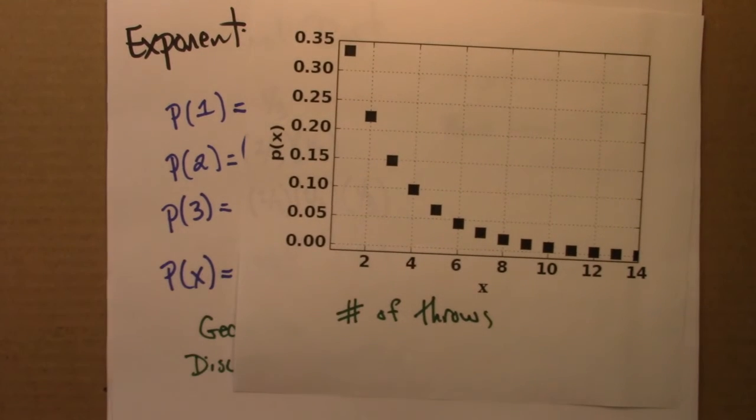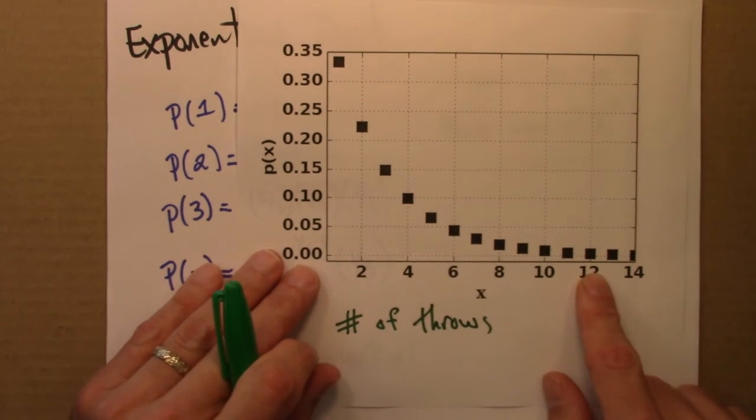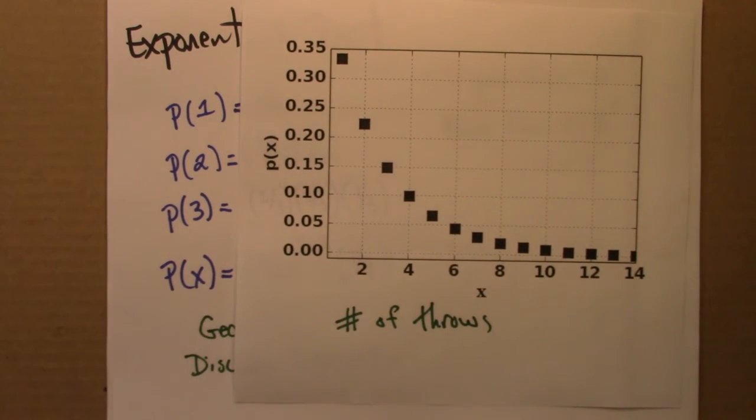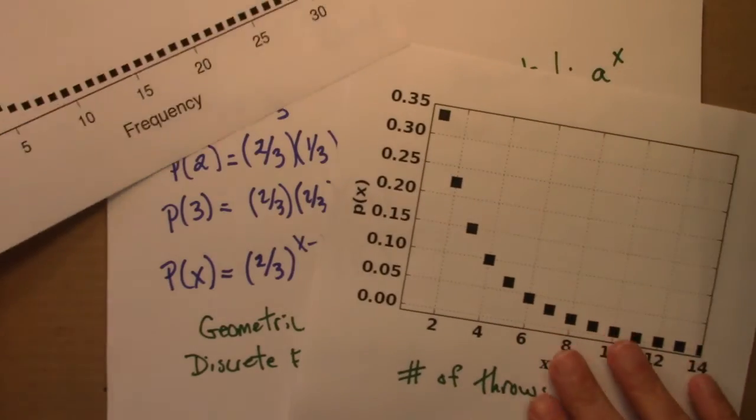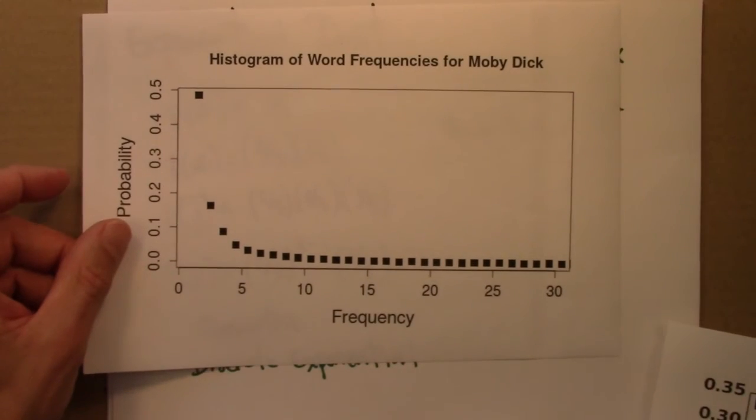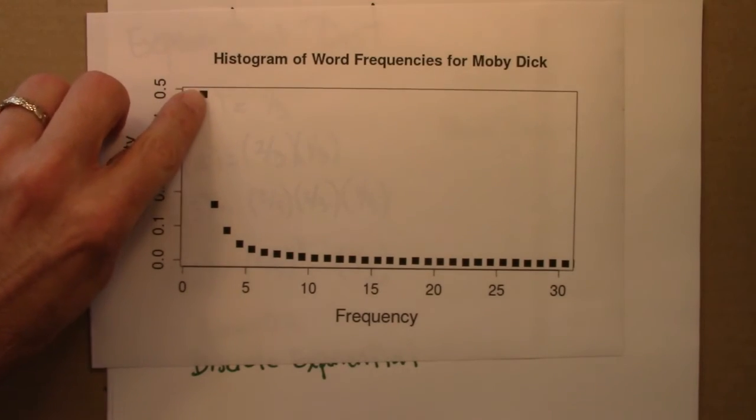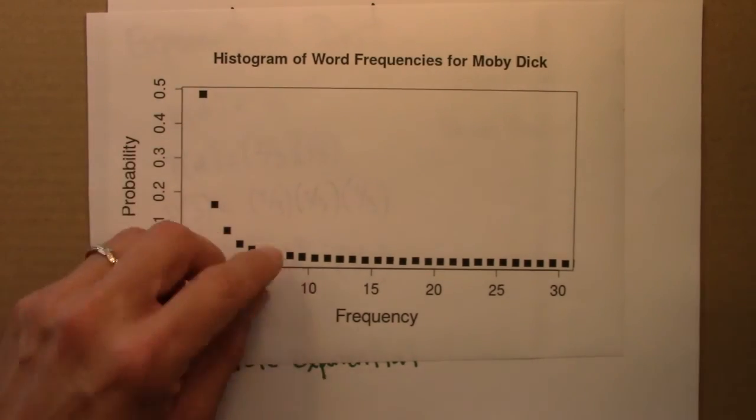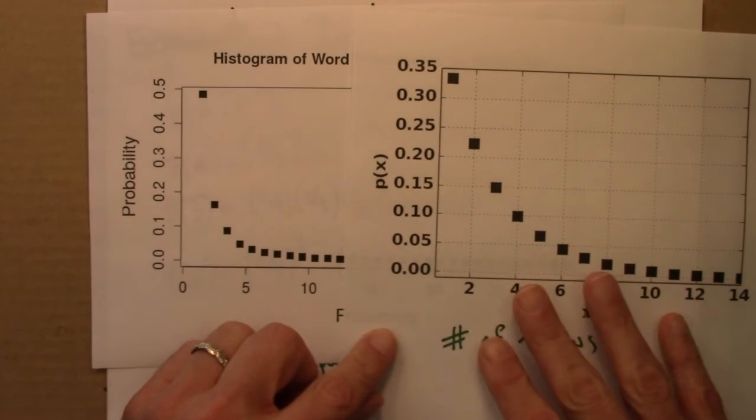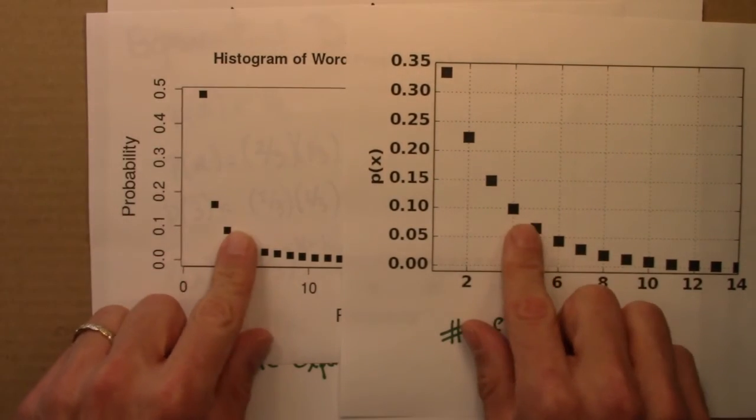And as we expect, the probability that it takes me eight throws or ten or twelve or fourteen is going down quite quickly. So perhaps superficially, this looks a little bit like the results from Moby Dick. And it definitely does. We see a large value down here at one that also decays, gets small quite quickly. But we'll see in the next subunit that actually these have very different properties.